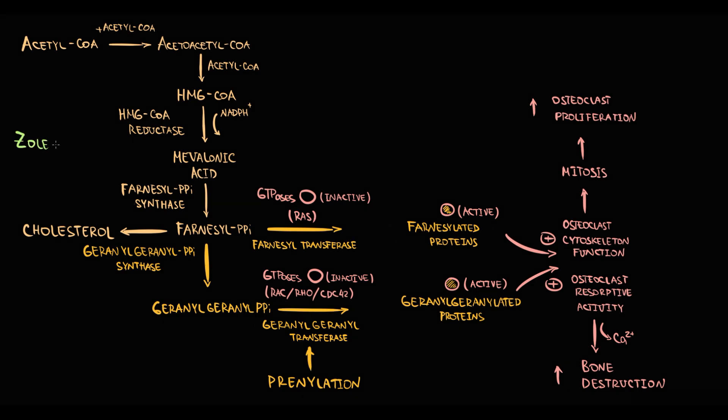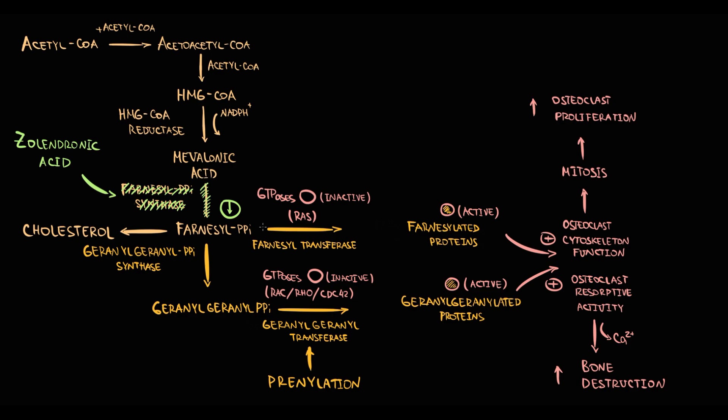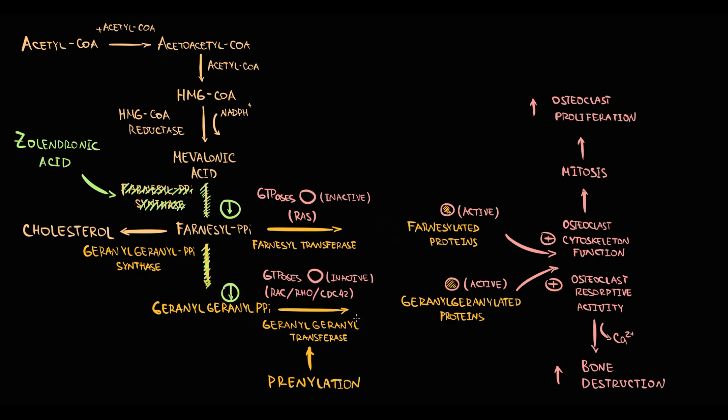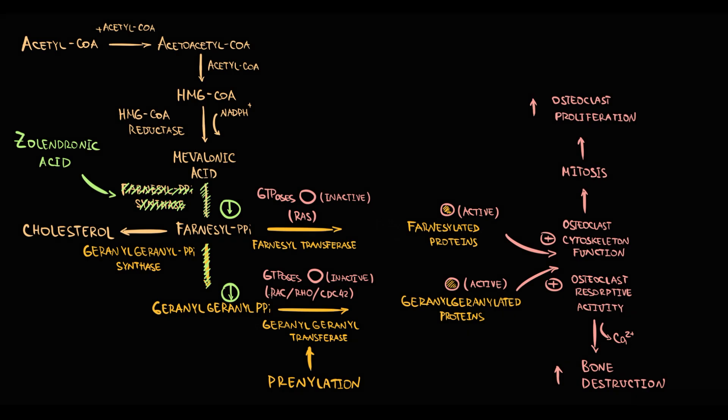Zoledronic acid blocks farnesyl pyrophosphate synthase. As a result, it inhibits formation of farnesyl pyrophosphate. Without farnesyl pyrophosphate, geranyl-geranyl pyrophosphate cannot be formed. Without these two metabolites, prenylation becomes impossible, so GTPases cannot be activated.